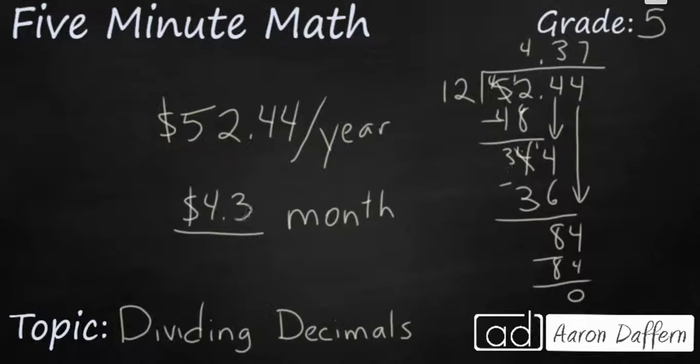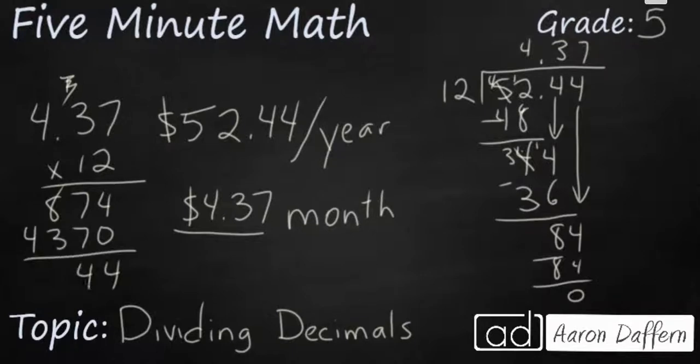But once again, let's use the inverse operation. Let's double check that with multiplication to make sure we did it right. 4.37 times 12. We go 2 times 7 is 14. 2 times 3 is 6, and the 1 is 7. And that's going to be 8. Get rid of that. And then it's easy. You can just write 4, 37 because you're multiplying by 1. And if you add it up here, you see we are going to get 52.44. We have 2 digits behind the decimal in our factor. So, 2 digits behind the decimal in our product. That's how you check out. It's $4.37 a month.